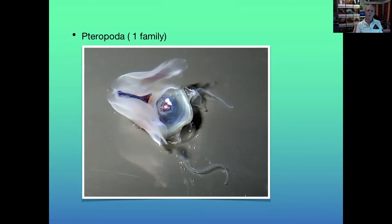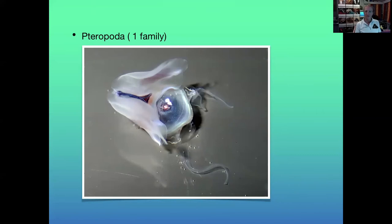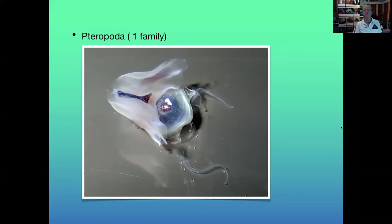Pteropoda are sea butterflies — beautiful, pretty small, and still have a shell. Unlike most sea slugs that live on the substrate, these spend their entire life in the plankton. They're generally photographed during 'black water dives' — hanging on a rope under a boat in pitch black in the middle of the ocean trying to photograph things zooming by. We actually had a swarm of these come through about 12 months ago in the daytime, and my dive buddies could see them from the boat — really amazing.